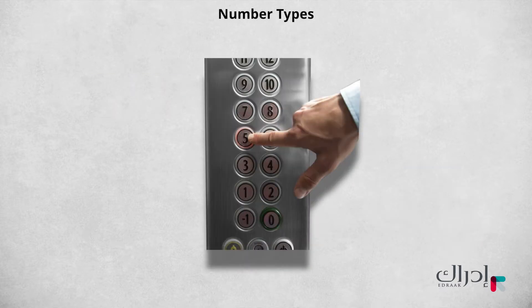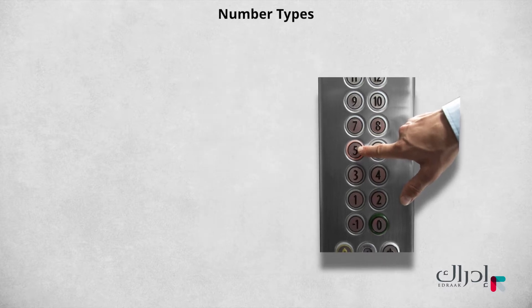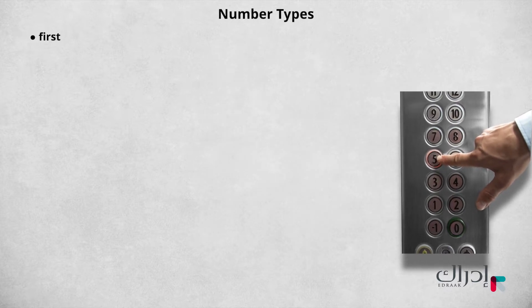Meanwhile, ordinal numbers are numbers that tell you the position of someone or something in a group or list — as in first, second, third, or in numerals as 1st, 2nd, and 3rd. Most ordinal numbers end in the letters TH.